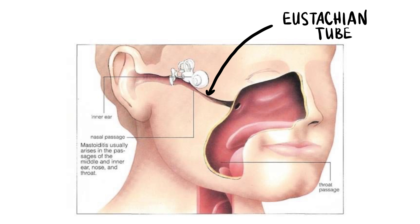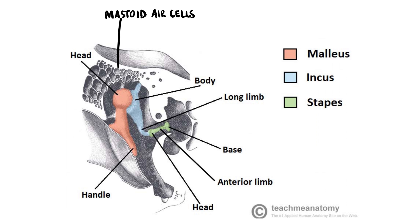In children, the Eustachian tube is narrow and horizontal, so children are more prone to middle ear infections, that is, otitis media. The mastoid air cells sit posteriorly to the middle ear, separated from it by a thin layer of bone, although there is a small opening superiorly allowing communication between the two areas.